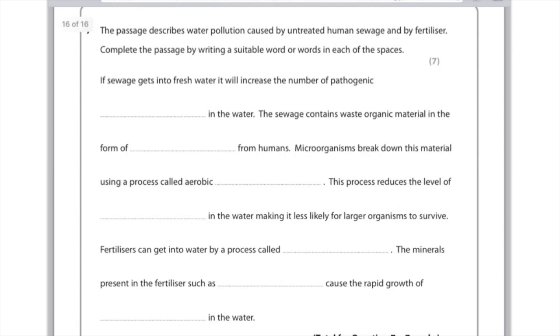Fertilizers can get into the water by a process called leaching, meaning they get washed out of soil. The minerals present in fertilizer, such as nitrate, phosphates, potassium, or ammonium, cause the rapid growth of algae or plants in the water.